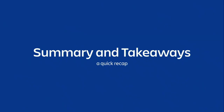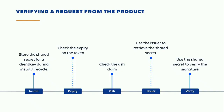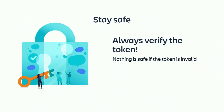A quick recap and summary of how it all works. From start to end, how do we verify a request from the product? First, during the install lifecycle, we store the shared secret for that client key. Then, when we receive a request, we check the expiry on the token to make sure it hasn't expired. Then we check the QSH claim to make sure it matches all the request parameters. Finally, we use the issuer information to retrieve the shared secret, generate another signature, and verify it against what we received. Remember, all of these safety properties only work if you verify the token. If there's one thing you take away from this talk: always verify your token. Nothing is safe if you don't.